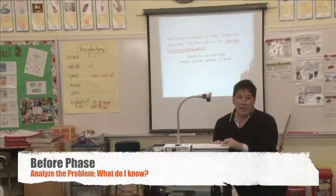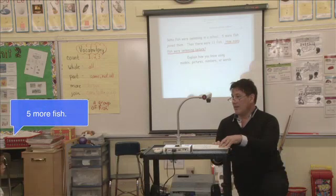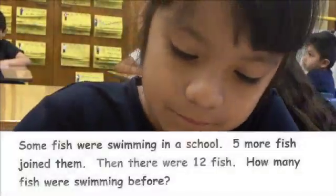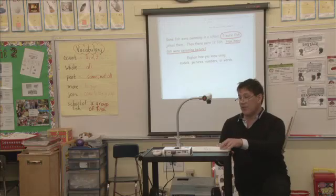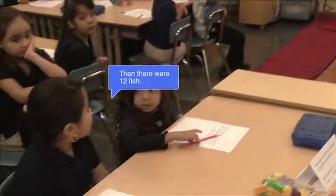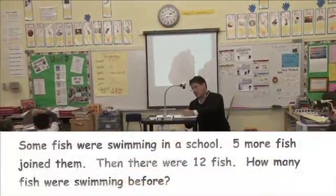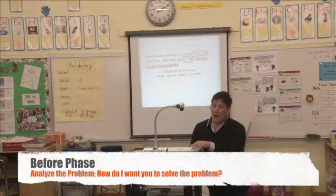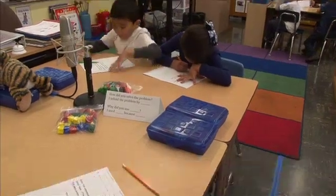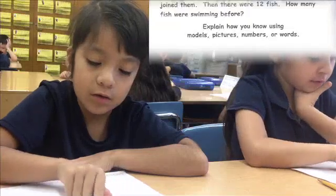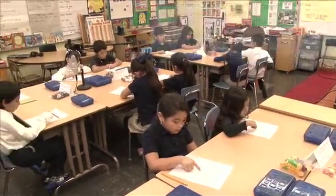Boys and girls, what information do we know to help us solve the problem? Five more fish. Circle five more fish. What other information do we have to help us solve the problem? Then there were twelve fish. Circle twelve fish. We're going to try to solve the problem in more than one way. Everyone look where my finger is where it says explain. Explain how you know using models, pictures, numbers, or words.